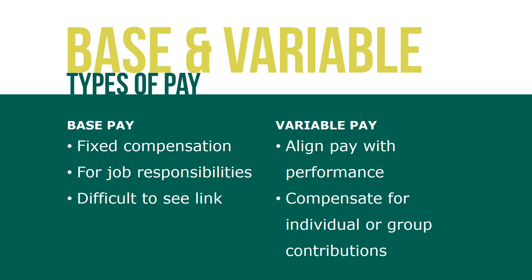Employees may not always see the link between base pay and organizational objectives, whereas variable pay allows employees to see that link and how their actions reflect the organization and the achievement of its goals. It is important for any variable pay plan to align employee performance to organizational objectives and ensure that employees understand the link. Variable pay is compensation that's contingent on discretion, performance, or results achieved. Also known as pay at risk, variable pay is not guaranteed and the company needs to hit certain objectives for employees to receive variable pay payouts.